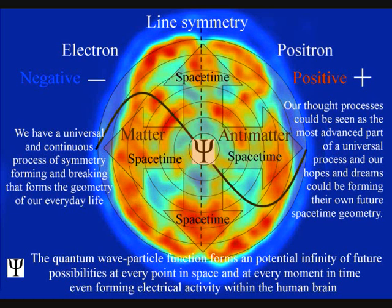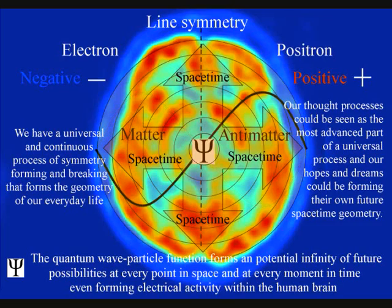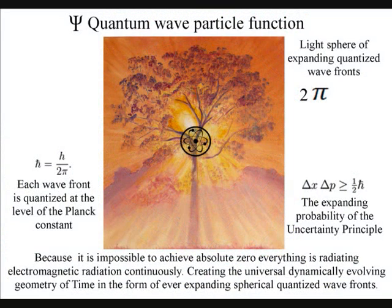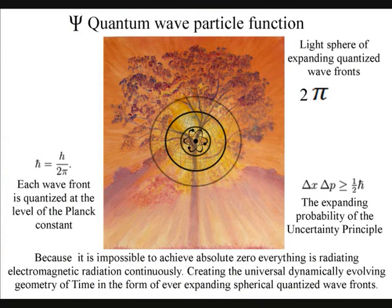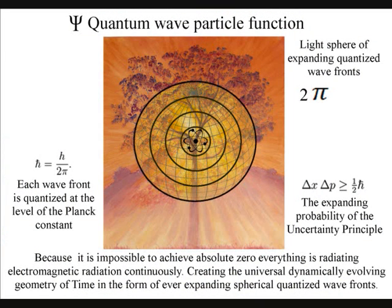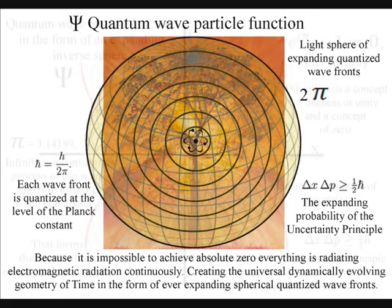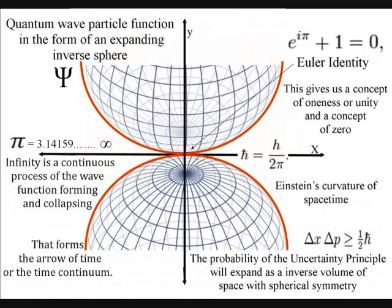If these electrical impulses that cause chemical changes are formed by photons, then consciousness is formed by the physics of quantum mechanics. Therefore our thought processes could be seen as the most advanced part of a universal process, and our hopes and dreams could be forming their own future space-time geometry.